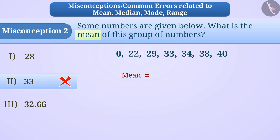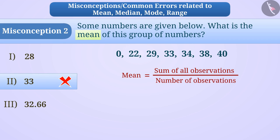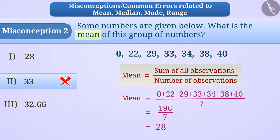Mean is equal to sum of all observations divided by number of observations. Therefore, the mean here will be 28. Hence, option 1 will be the correct answer.